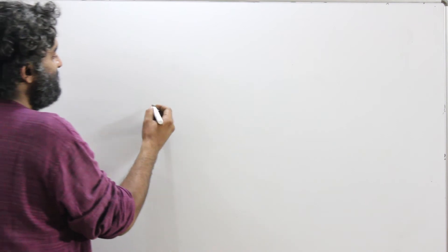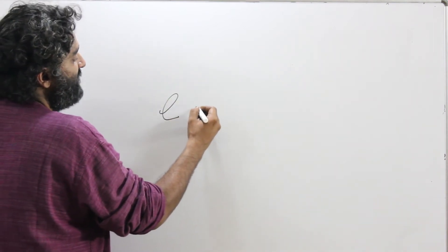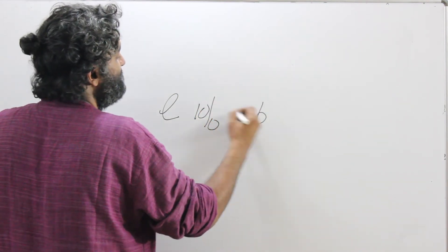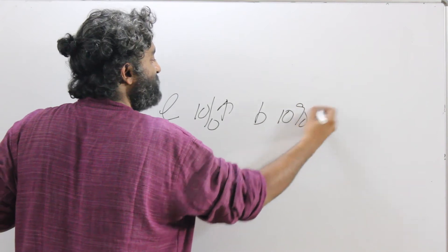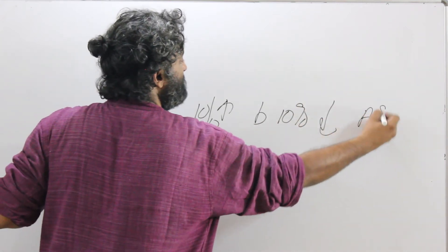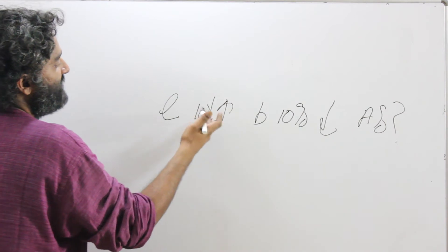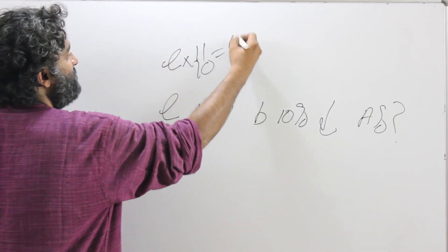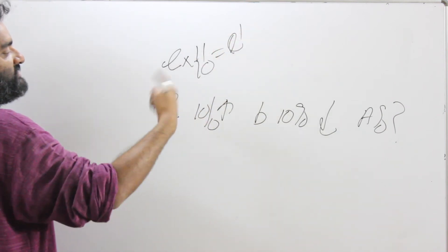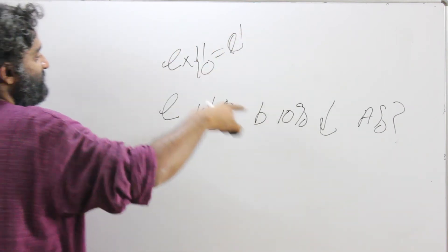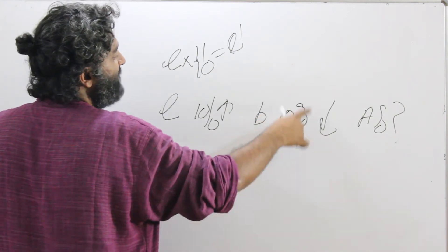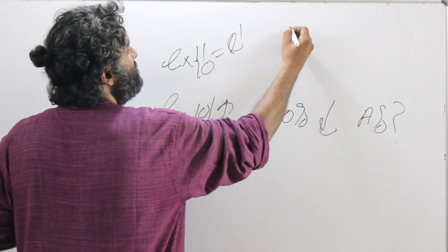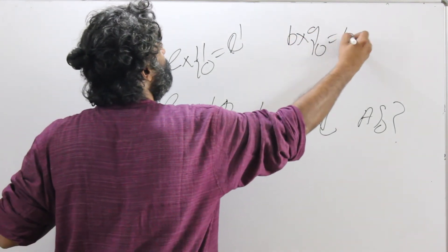Let's look at another example with the same rectangle. Length has increased by 10% — the multiplying factor is 11 by 10. 10% is 1 by 10, added to 10 by 10, gives 11 by 10, so L into 11 by 10 equals L dash. The breadth has reduced by 10%. 10% is 1 by 10; reduction of 1 by 10 from 10 by 10 gives 9 by 10. So breadth into 9 by 10 equals B dash.